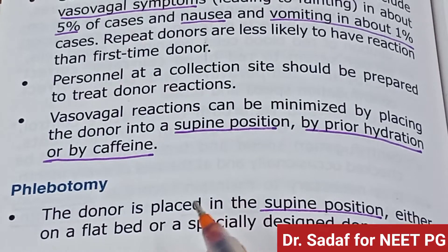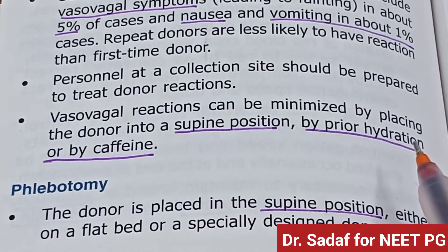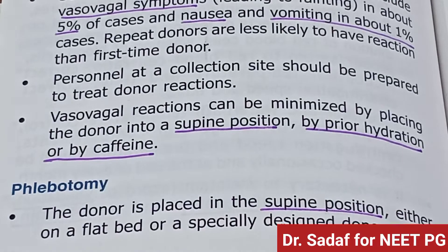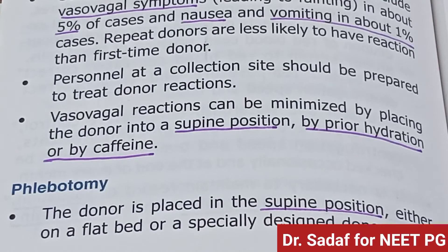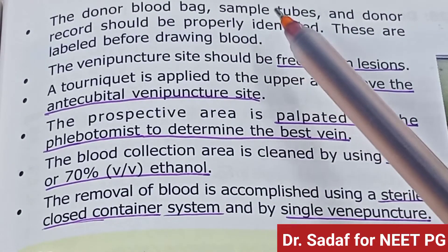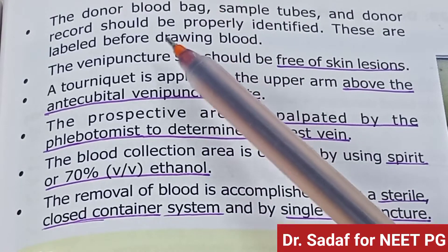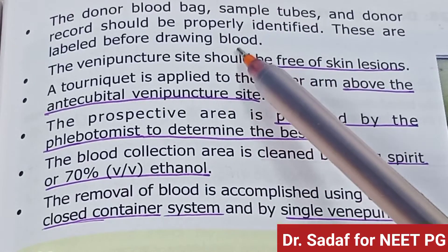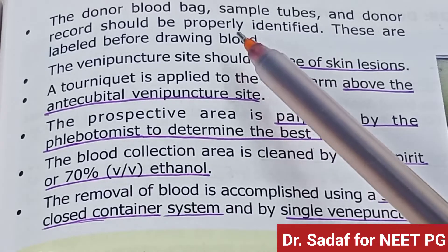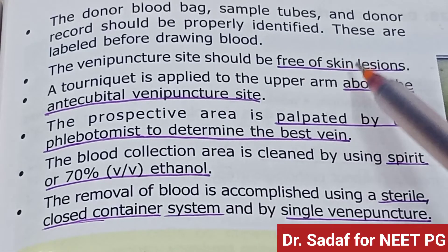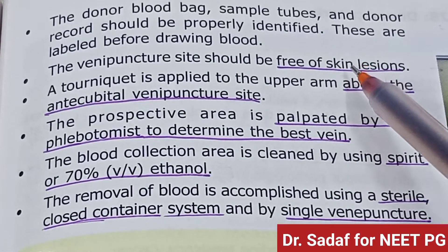During phlebotomy, donors are placed in a supine position on a flat bed or a specially designed donation chair. The donor bag, sample tube, and donor record should be properly identified and labeled before drawing the blood. The venipuncture site should be free of lesions.